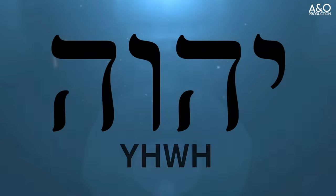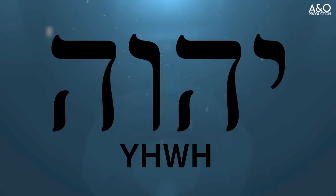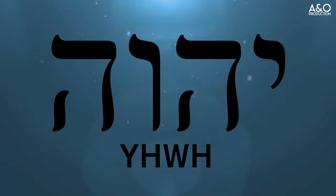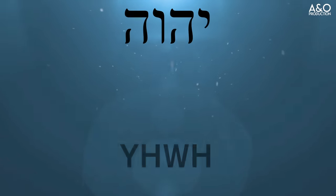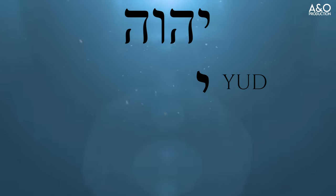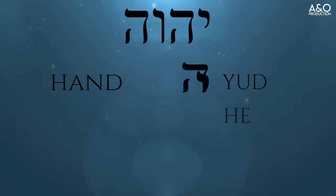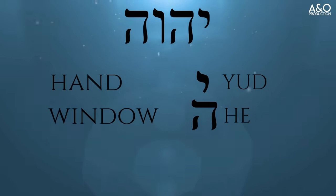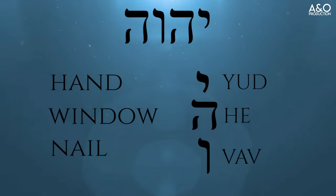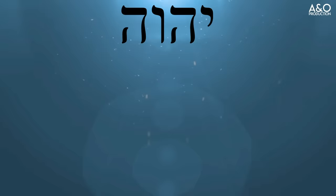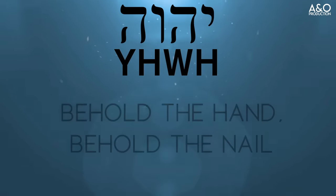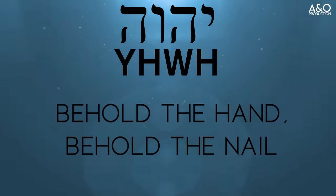With all of this in mind, using the ideographic meanings of Yud, He, Vav, He — most commonly accepted by Jewish scholars throughout the centuries — the translation of the letters of the Holy Name of God, symbolically speaking, can accurately be translated as: Yud, the hand; He, a window, or the meaning 'behold' or 'look'; and Vav, a nail. So symbolically speaking, the combination of these letters can be accurately and most assuredly translated as: Behold the hand, Behold the nail.